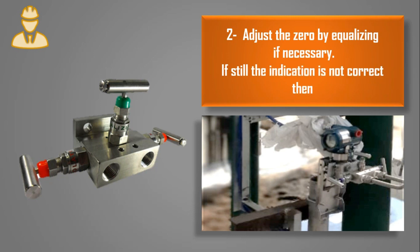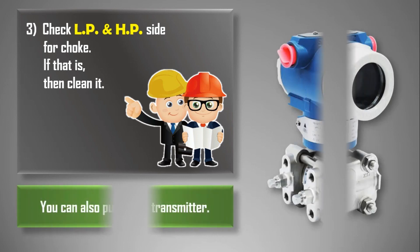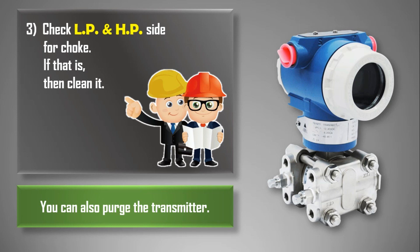If we adjust the zero by equalizing and the readings are still inaccurate, then we follow the third step: check the LP and HP side for a choke. If a choke is found, clean it. You can also purge the transmitter.